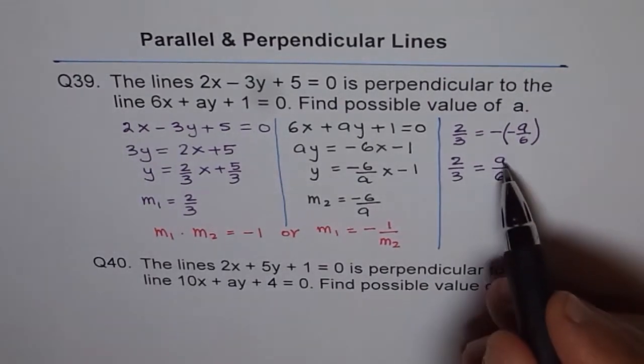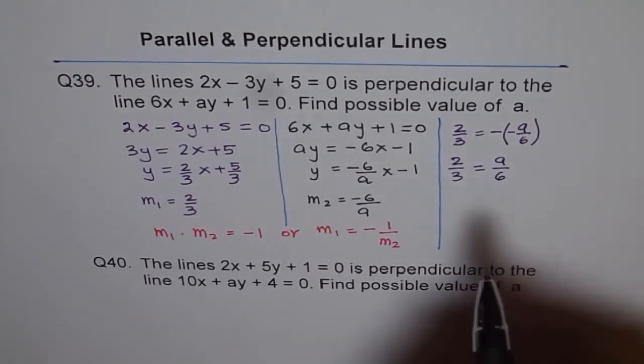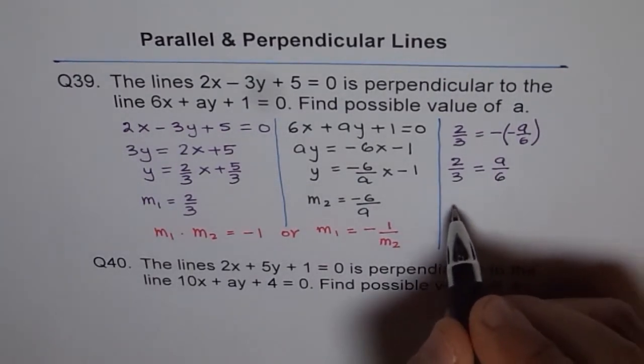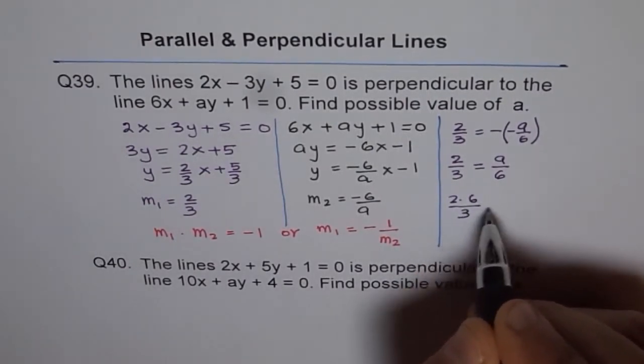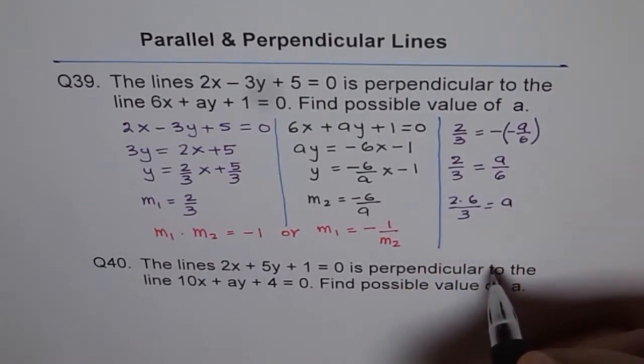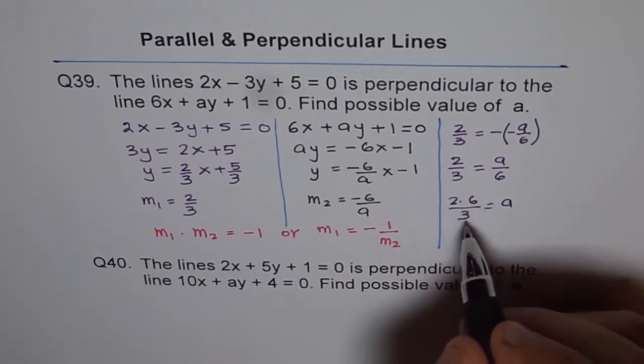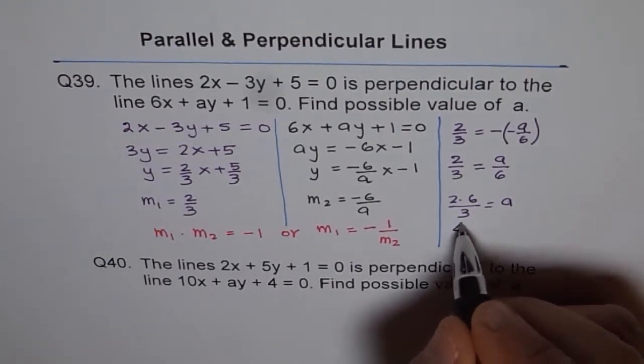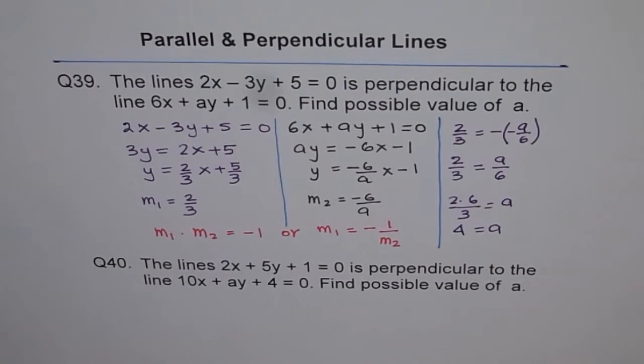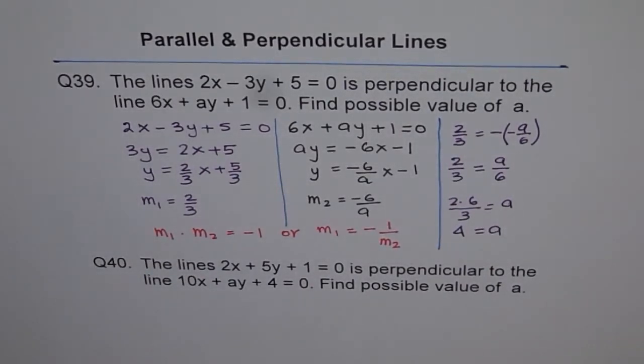From here we can find the value of a. a is equal to 2 times 6 over 3 is equal to a. 12 divided by 3 is 4. Therefore a is equal to 4. So that is how we can find the value of a. That's the way to find a in such a situation.